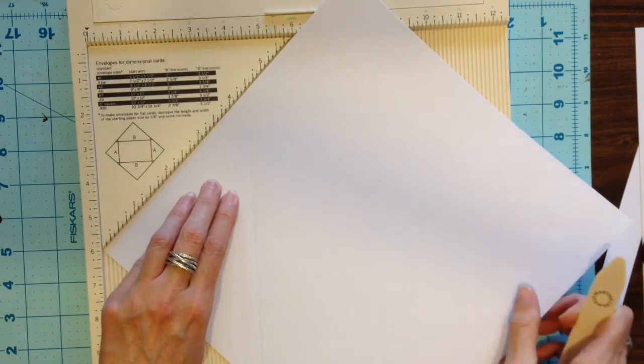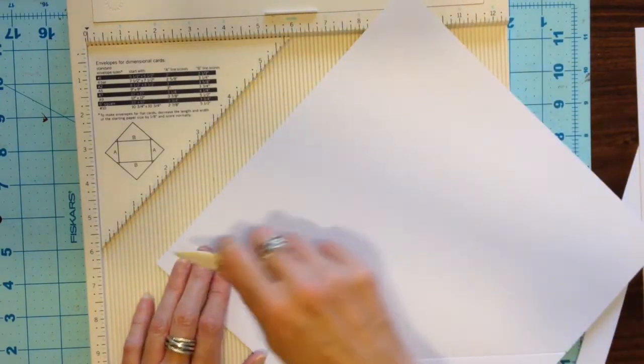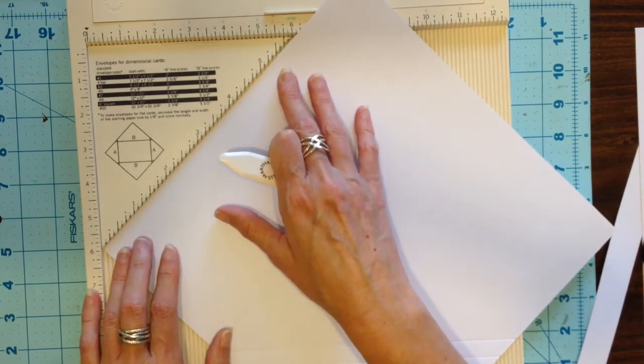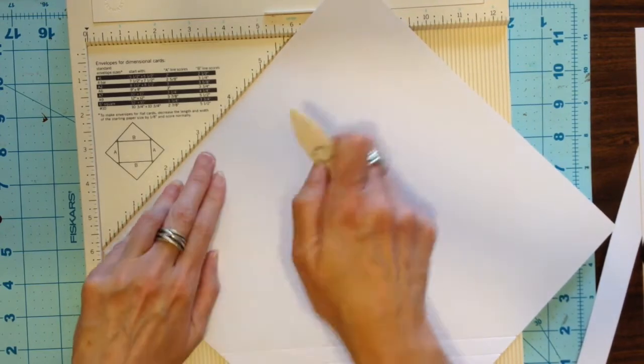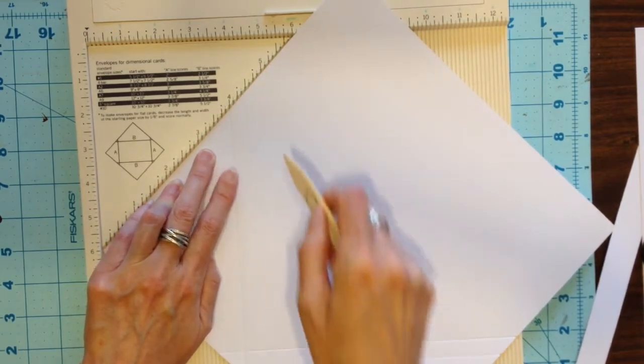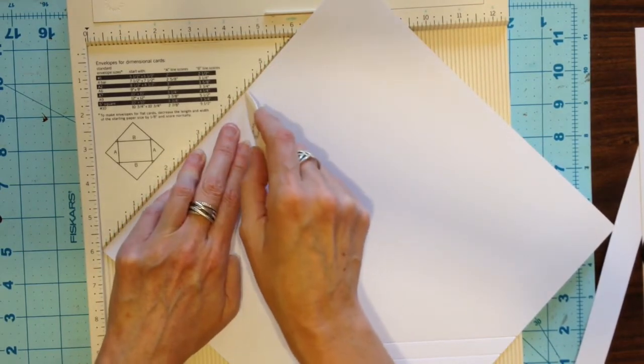Rotate your paper once and again push it up to that diagonal edge. We're going to score once more at four inches and four and a half inches.